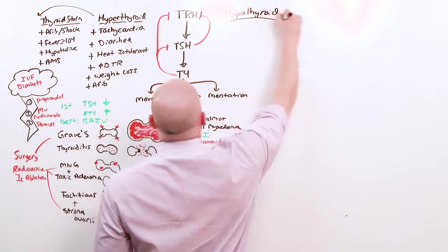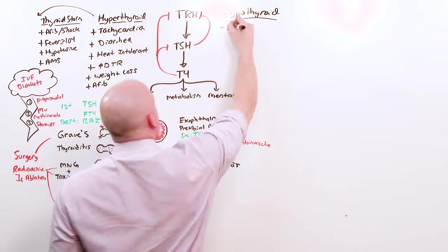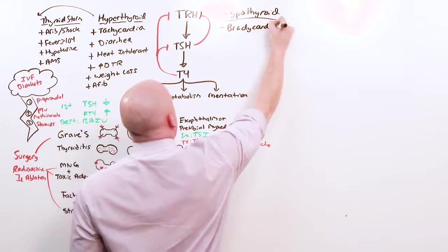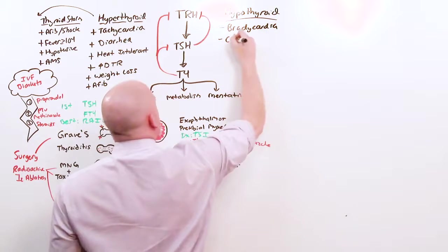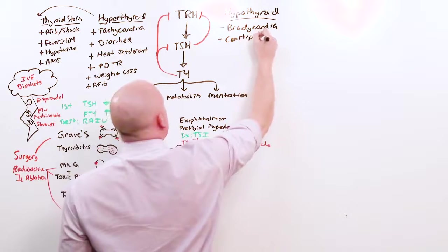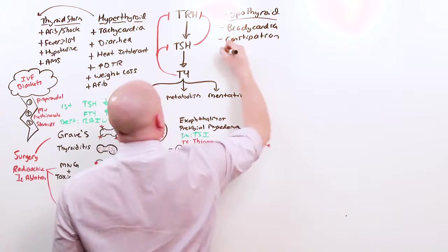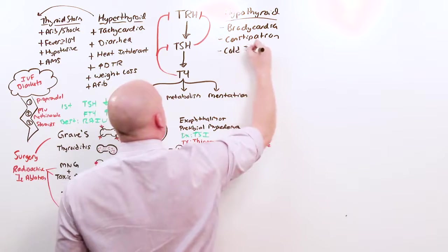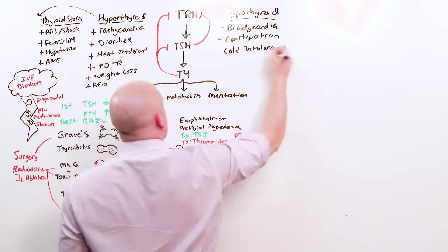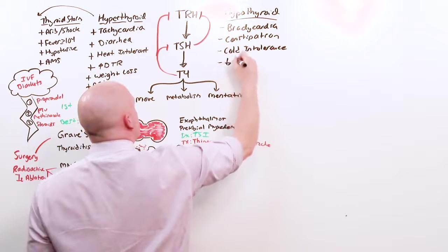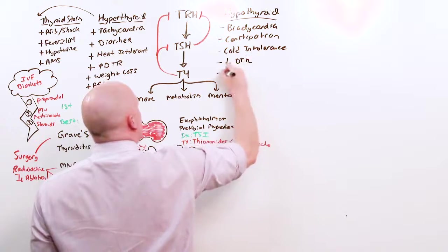Hypothyroidism is exactly the opposite. You'll have bradycardia rather than tachycardia, constipation, cold intolerance, the patient is cold and everyone else is warm, decreased deep tendon reflexes and weight gain.